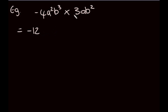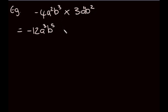Now we're going to multiply the a's. The base is the same, so we add the exponents. We've got a squared here, and remember there's an invisible 1 above the other a. So it's 2 plus 1, we get a to the power of 3. And for b, we're going 3 plus 2, which is 5. So our final answer is negative 12a to the power of 3, b to the power of 5.